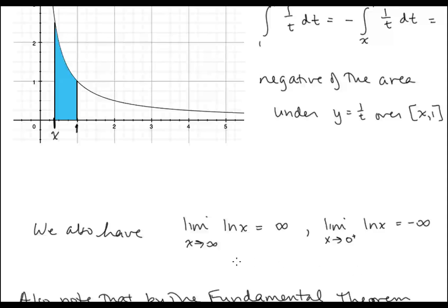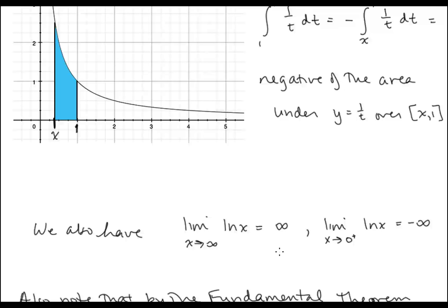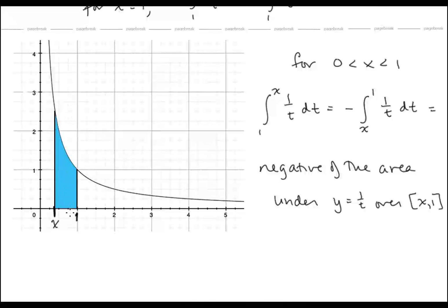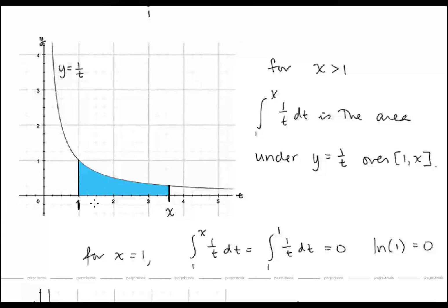We also have that the limit as x goes to infinity of ln x is infinity, and the limit as x goes to 0 from the right of ln x is negative infinity. We can get an understanding of these limits by looking at the graphs and the definition. As x goes to 0 from the right, this area is infinite. Similarly, as x goes towards infinity, this area is infinite.